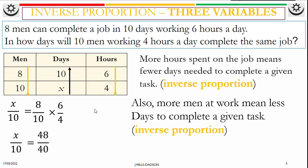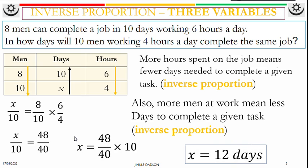This is 48 over 40. Multiply both sides by 10 and work it out. X is 12 days.